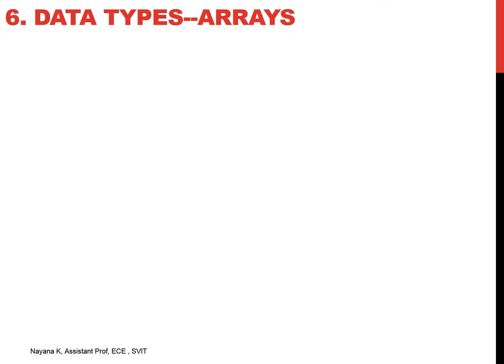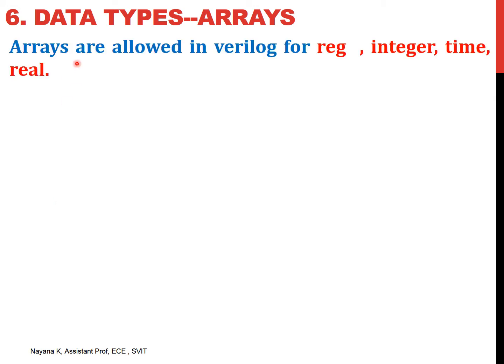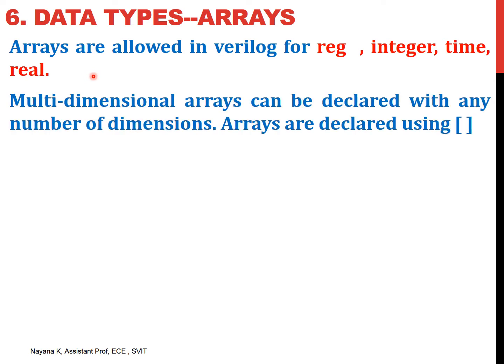First, let us understand about arrays. Arrays represent a collection of elements of similar data type. In Verilog, we can declare arrays for register, integer, time, and real data types. We can declare any number of dimensions — a multi-dimensional array can be declared. In Verilog, arrays are declared using square brackets, which is similar to vector declaration.